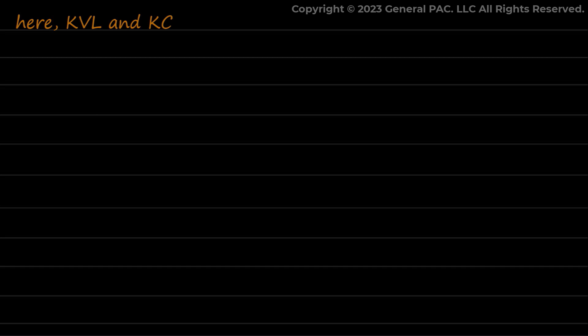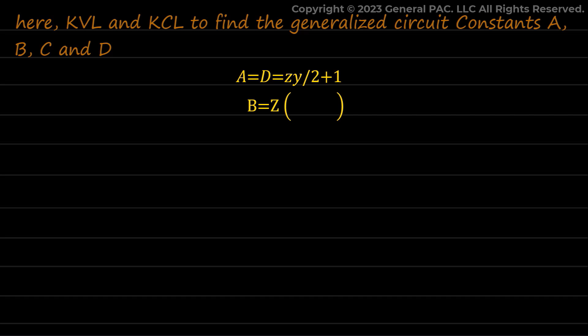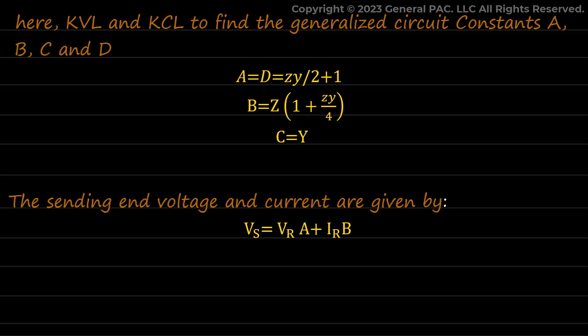Here we again use KVL and KCL to find the generalized circuit constants A, B, C, and D. And then we are able to write general equations to find sending end voltage and current of medium line using nominal T model. The constants are A = ZY/2 + 1, B = Z(1 + ZY/4), C = Y. The sending end voltage and current are given by VS = VR×A + IR×B and IS = IR×D + VR×C.